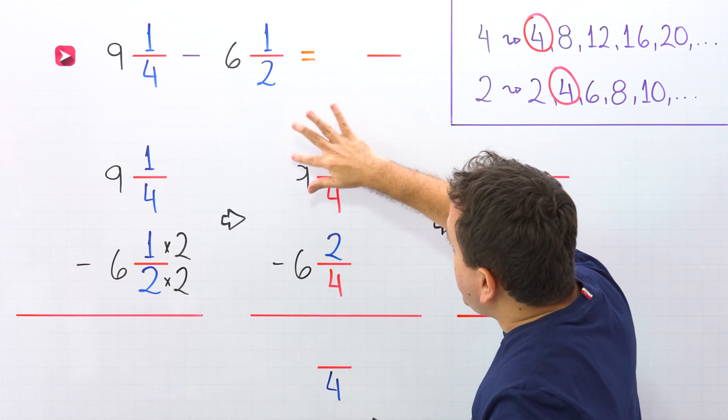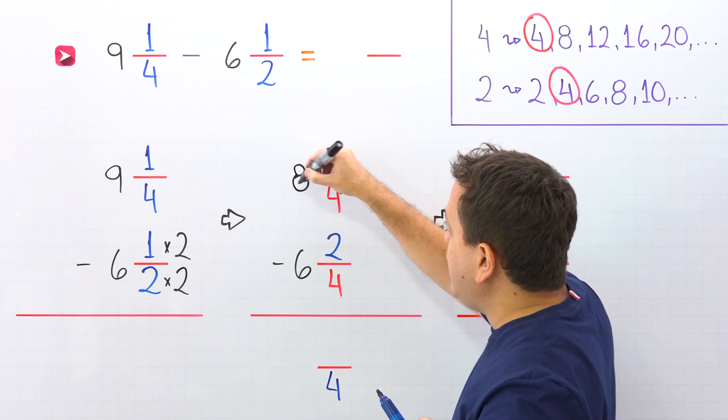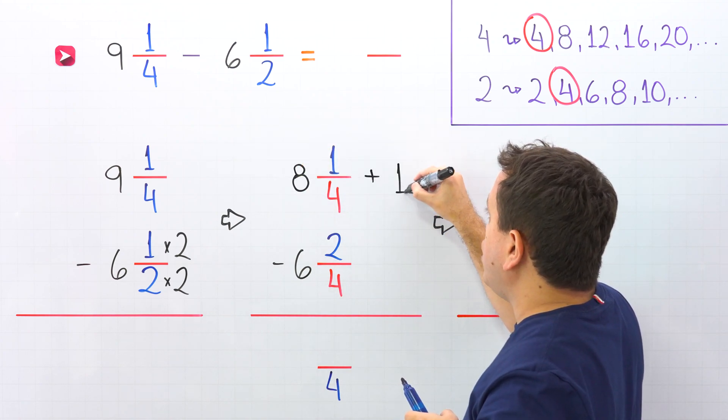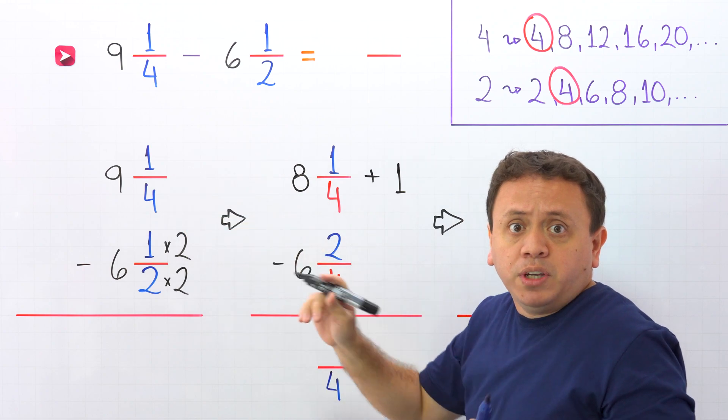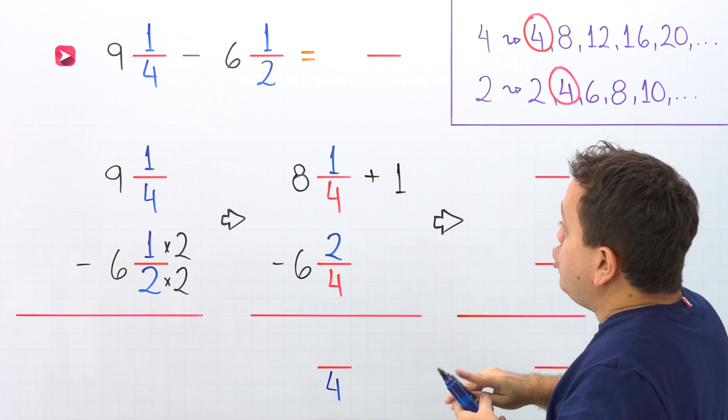Pay attention! Instead of writing 9, we are going to write 8, 8 plus 1. Because 8 plus 1 gives us 9. It's the same. As you can see, 1 is located in the column of the fractions, so we need to rewrite 1 as a fraction.